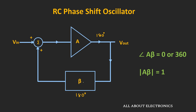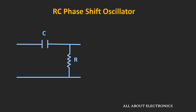Let's understand how the feedback circuit provides the 180 degree phase shift. First, let's look at the simple RC circuit. This circuit is nothing but a high pass filter, also known as the phase lead circuit, because the output voltage leads the input voltage. The transfer function output-by-input can be given as R divided by R minus j·Xc, where Xc is 1 by ωC.